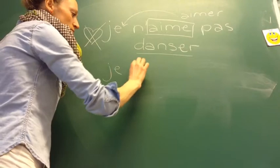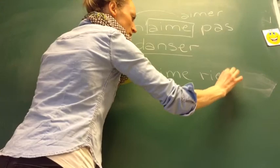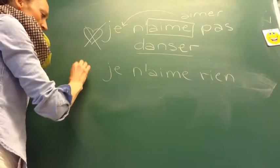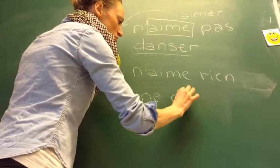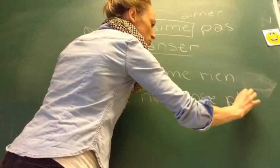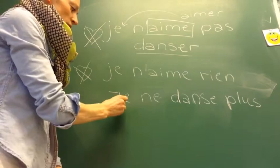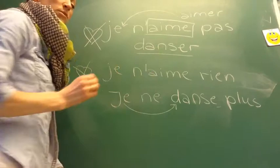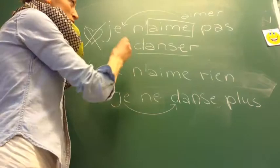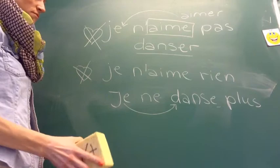For eksempel, hvis man skriver 'je n'aime rien' – jeg kan ikke lide noget som helst. Og man kan sige 'jeg danser aldrig mere': 'je ne danse plus'. Her er verbet bøjet så det passer til 'je'. Heroppe er den også bøjet så den passer til 'je'. Men her er verbet ikke bøjet – det står i infinitiv, i grundform – fordi den her oppe allerede er bøjet først.